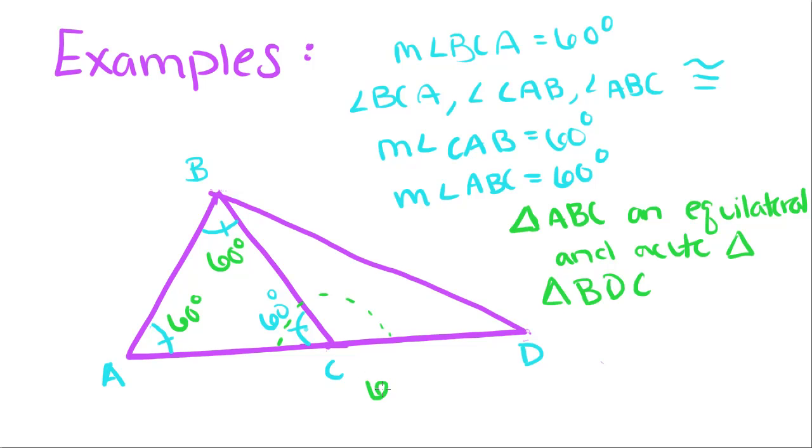So, we can add 60 plus, we're going to call this angle X, plus X, and we're going to set that equal to 180 to find out how big X equals. So, if we subtract 60, we find X equals 120 degrees.